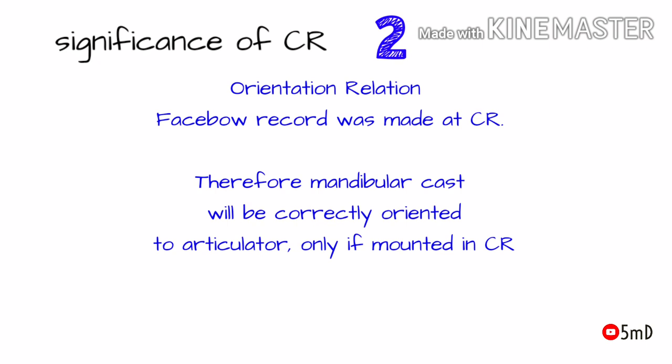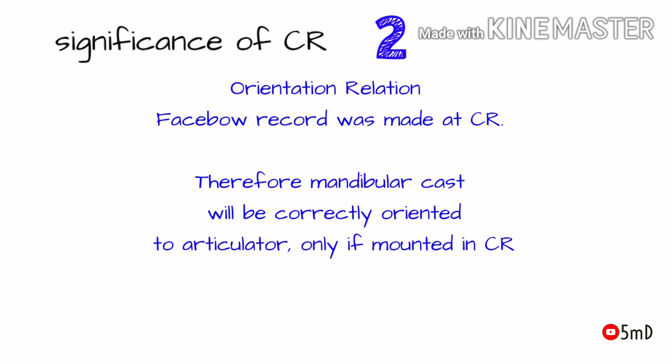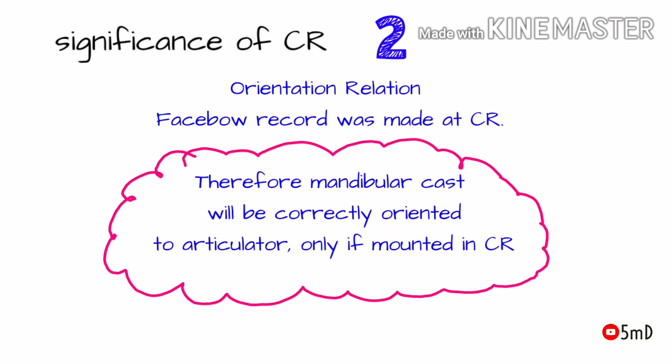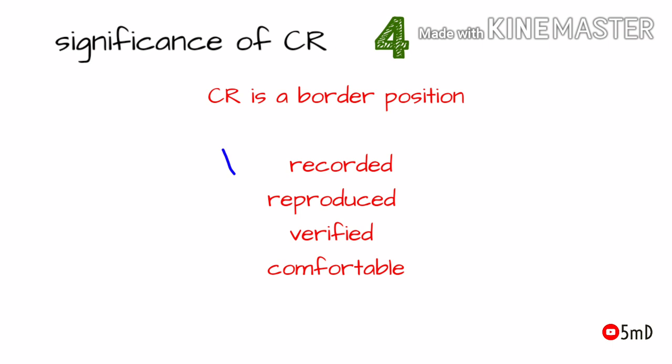CR and MIP should correlate in edentulous patients to avoid deflective contacts in CR. Similarly, when recording the orientation jaw relation — that is, the relationship of the maxilla to the skull cranium and face — the face bow transfer was made in centric relation. To correlate with the maxillary position transferred to the articulator, the mandible should be recorded in centric relation. We should also keep in mind that centric relation can vary with vertical dimension, therefore after determining the proper VD, centric relation should be recorded.